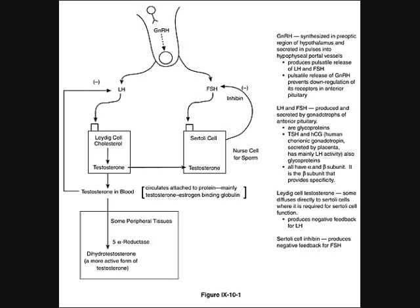Sertoli cells inhibit the production of excess FSH. Remember, normally the concentration of testosterone in the testes is 50 times that of the blood — there is 50 times more testosterone in the testes than circulating in the blood. FSH and Leydig cell testosterone are both required for normal spermatogenesis.